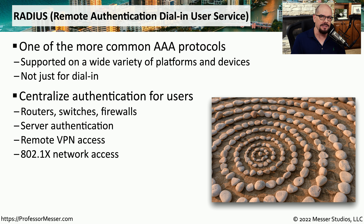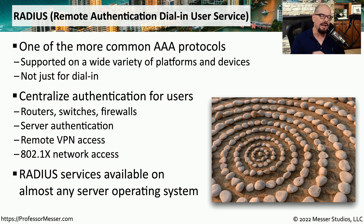Without having some type of centralized authentication on the network, you would have to manage authentications on all of these separate devices — your VPN server, a file server, a web server, and so on. Instead, you can have one central authentication source, such as a RADIUS server, and send all of your authentication requests to that server for approval. RADIUS has been around for a very long time, which gives it a great deal of industry support. Many devices and operating systems support RADIUS communication, and VPN servers and other network devices typically have an option to provide authentication via RADIUS.